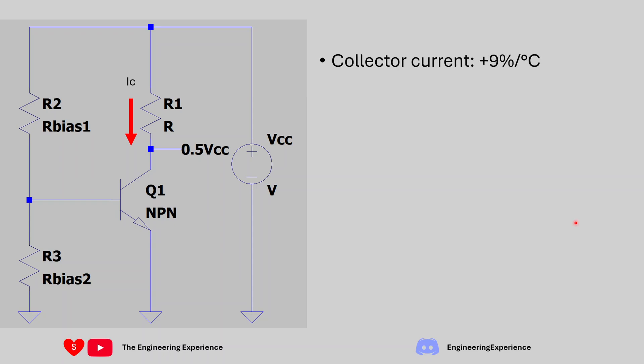A few things that the book tells us just before the question is that the collector current which is the current going down this path over here increases by 9% per degree C of temperature change for the circuit and we are setting the collector voltage which is the voltage on the collector pin of the NPN transistor to 50% of the power supply. So that's what we get from the question and this is something that we get just above the question which is very important for answering this question.